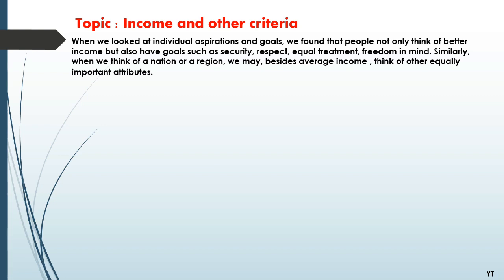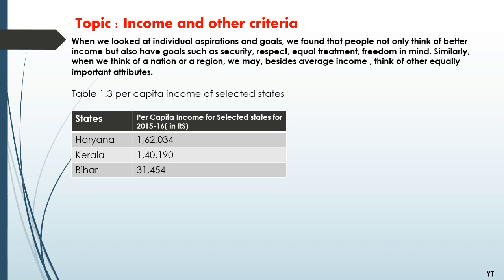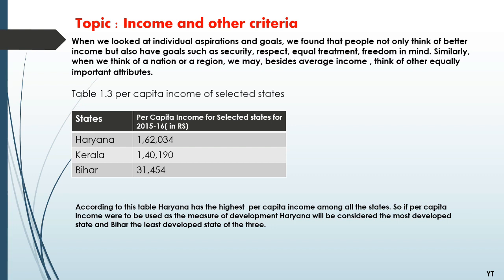To understand this, let's see tables 1.3 and 1.4 given in your textbooks on page 10. Table 1.3 shows per capita income of three different states of India: Haryana, Kerala, and Bihar. According to this table, Haryana has the highest per capita income among all the states. So if per capita income were used as a measure of development, Haryana would be considered the most developed state and Bihar the least developed.